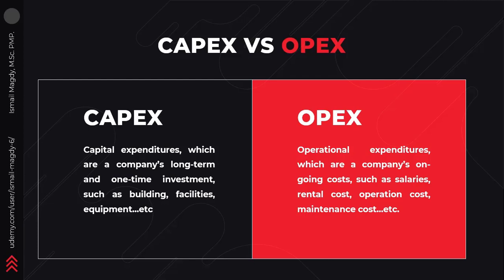CAPEX is defined as capital expenditures, which the company invests in the form of a one-time payment. It is the capital cost of equipment, facilities, buildings, and all similar assets. While OPEX is defined as operational expenditures, which is the ongoing investment to keep the organization in operation, such as maintenance cost, operational cost, salaries, rentals, and any similar ongoing costs.